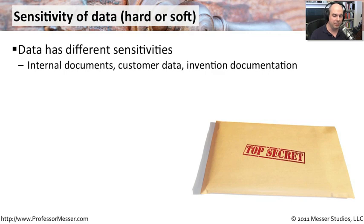We separate the data into hard data and soft data. Hard data being information that's printed out — that's in a book, in a binder, on a piece of paper. Your soft data being something that is digital.